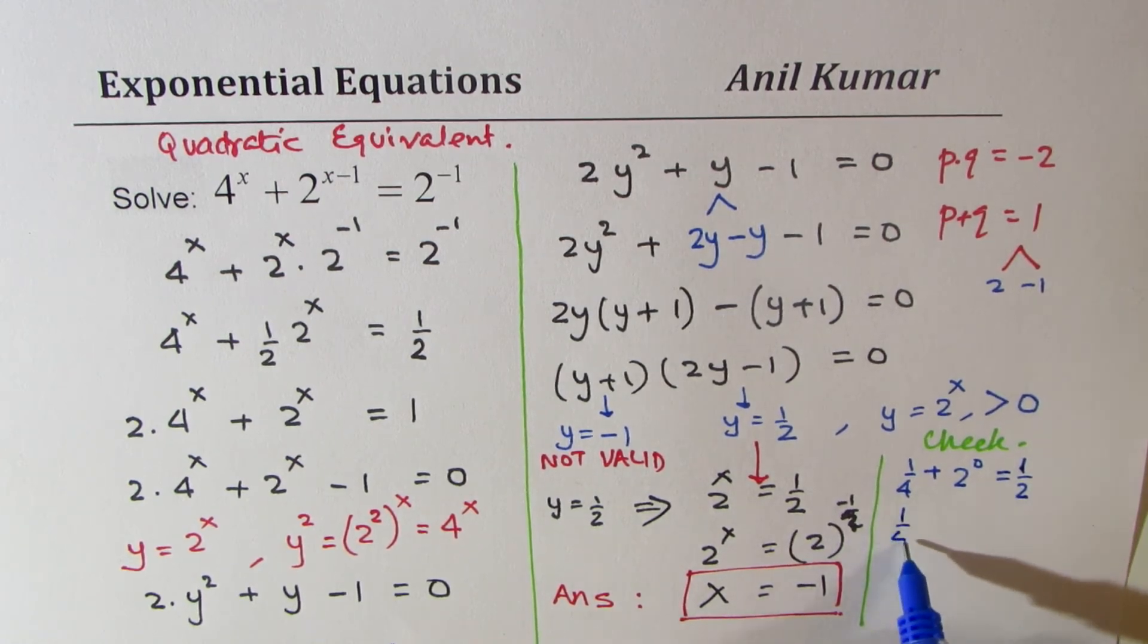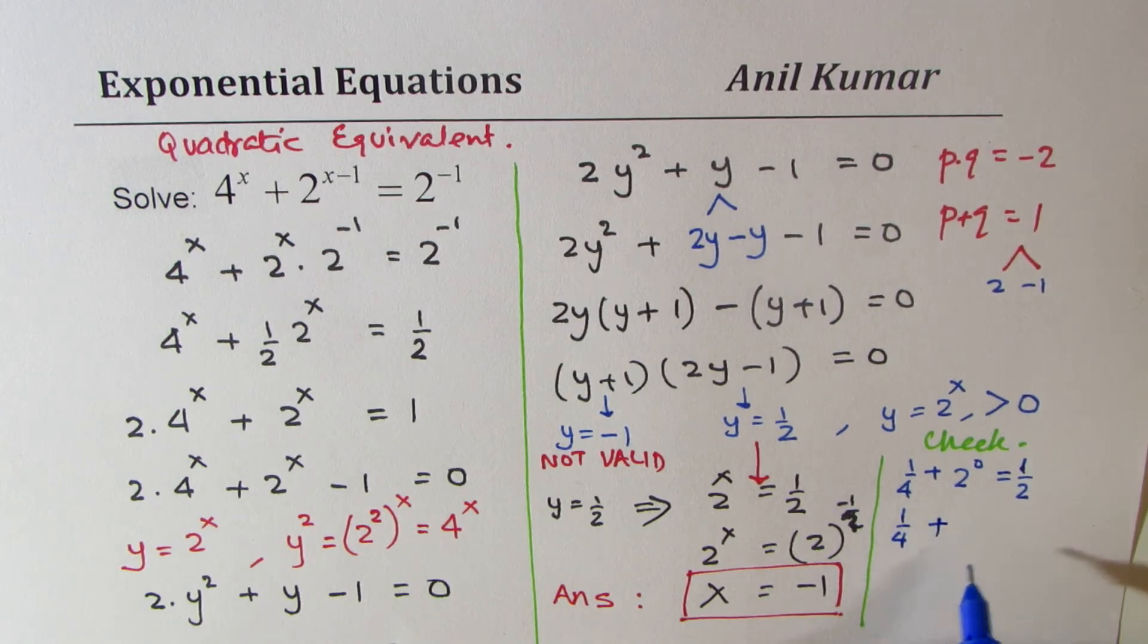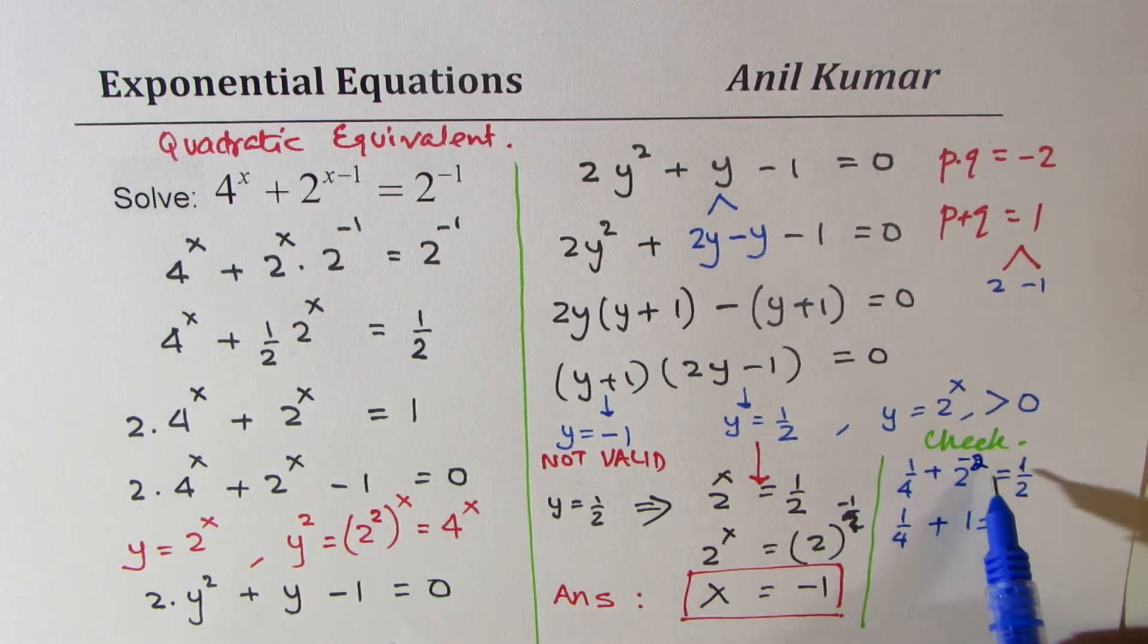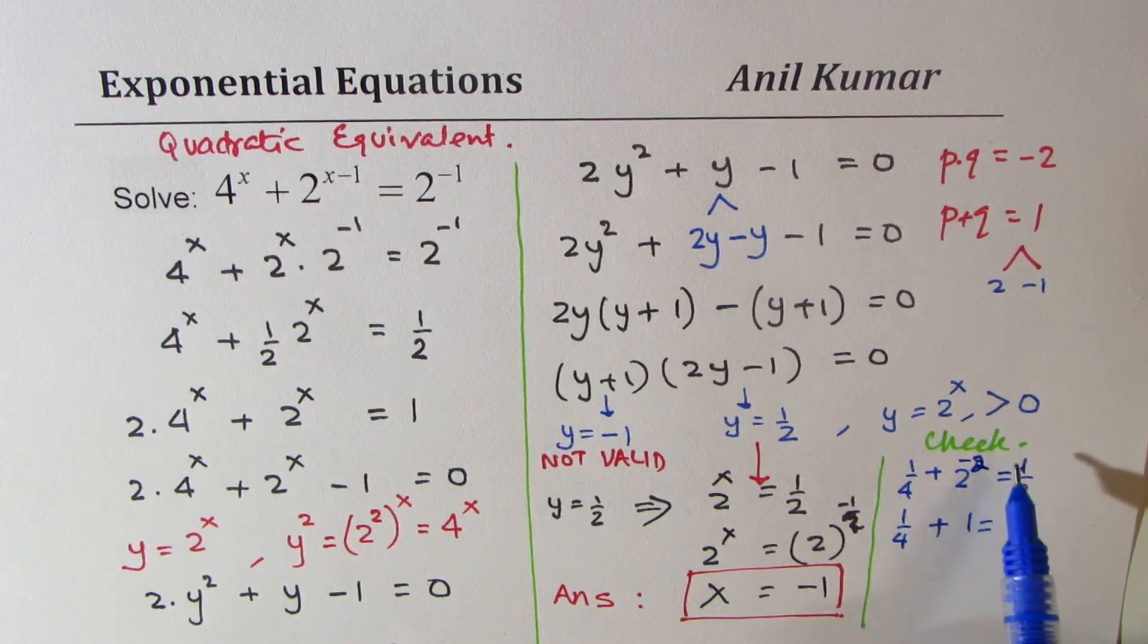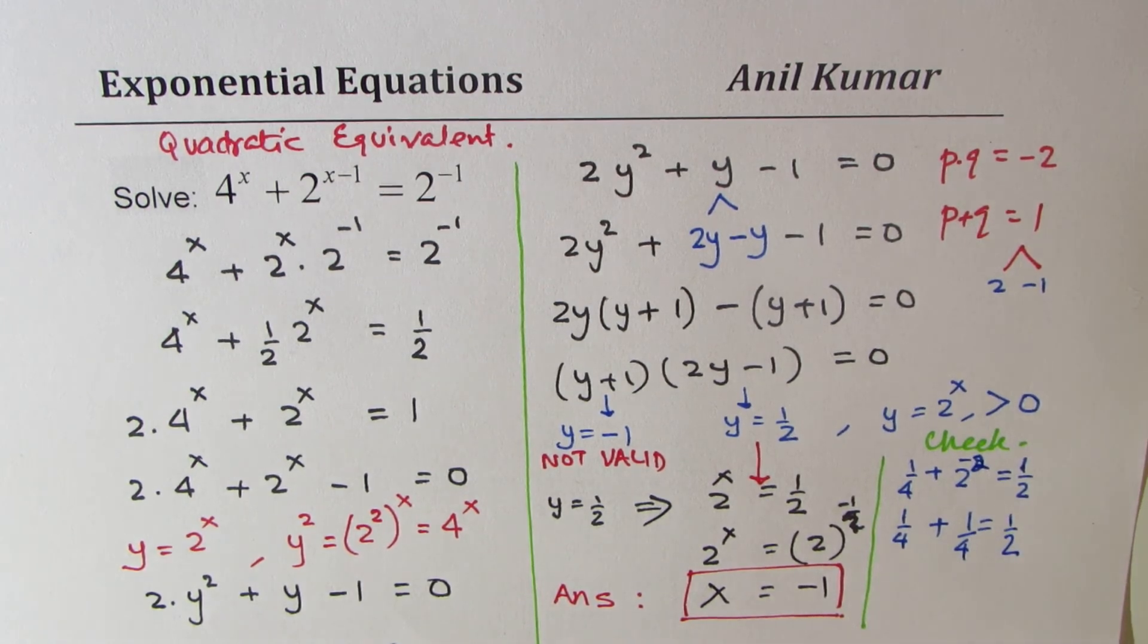So which is 1 over 4 plus, minus 1 gives us minus 2, I'm sorry. So 1 over 4, 2 to the power of minus 2, which is 1 over 4, which equals half. So that is how you can actually check and verify your answer.